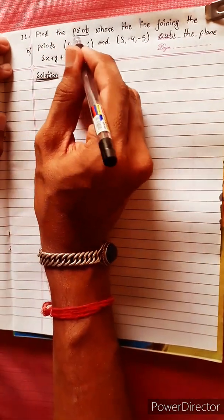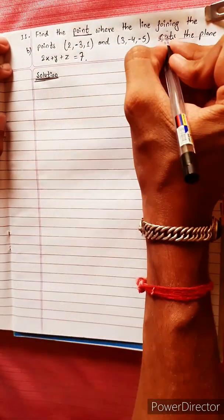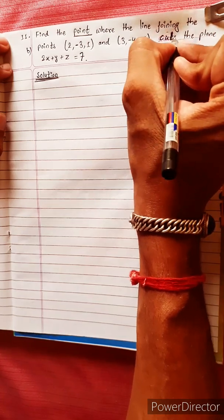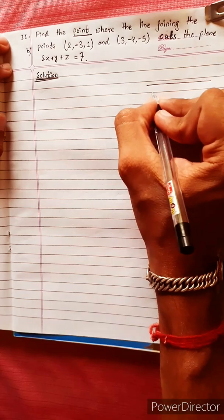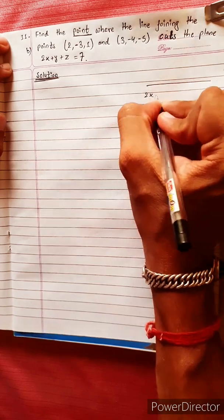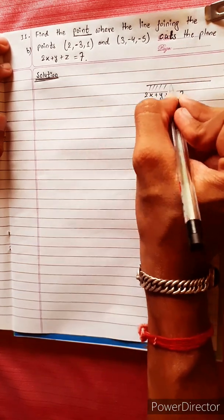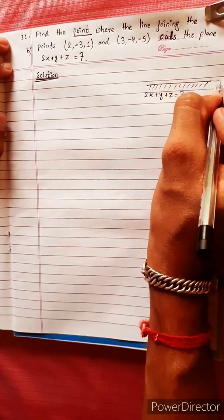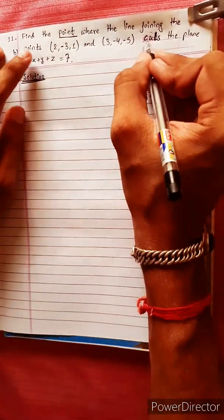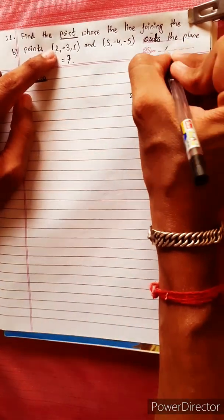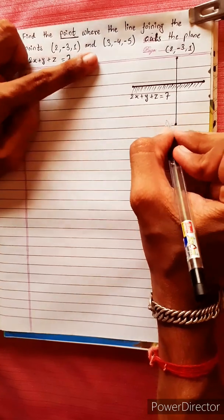Find the point where the line joining the points cuts and divides the plane 2x plus y plus z equals to 7. The two points are (2, -3, 1) and (3, minus 4, ...).